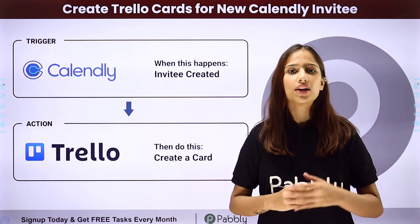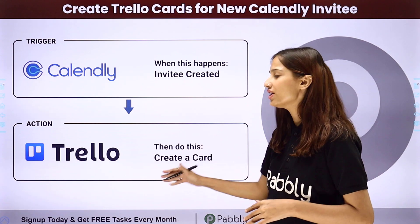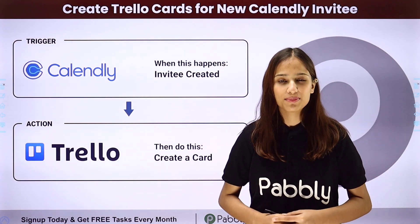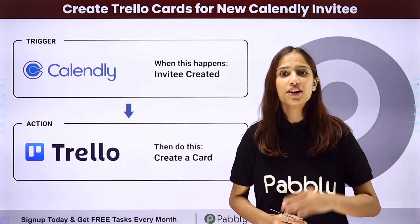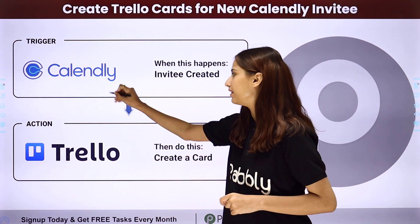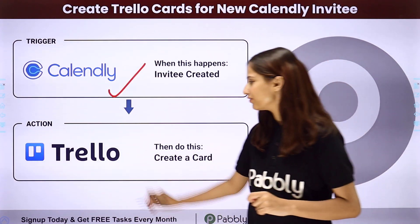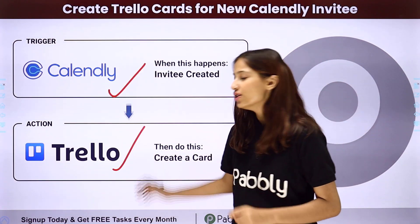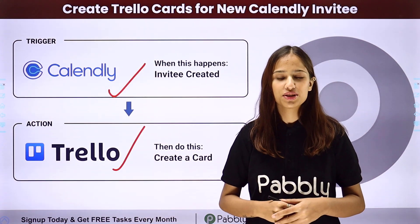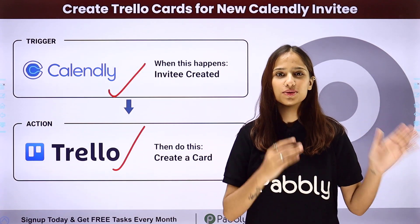To do that, I have to build an integration between these two applications using PabblyConnect, where my trigger application will be Calendly and my action application will be Trello. Follow me through the screen to see how I set up the integration.